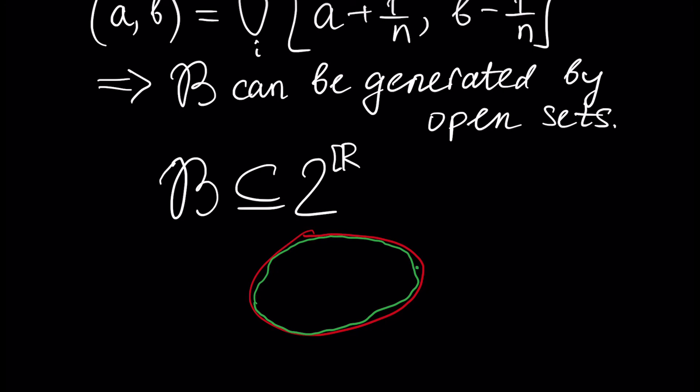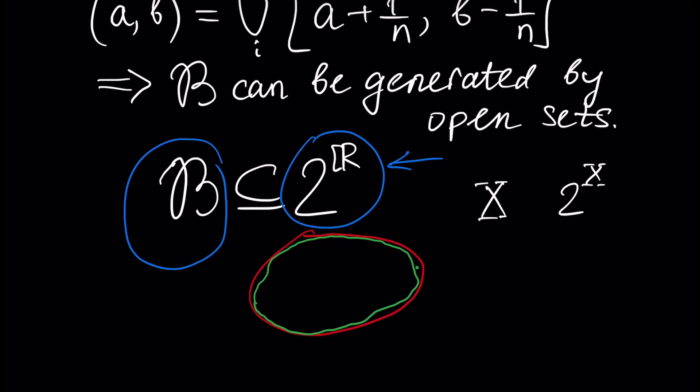Once again, the Borel sigma algebra is strictly included in the power algebra, because the power set is also a sigma algebra — it's the biggest sigma algebra. As we know, for set X, 2^X, which is the set of all subsets, is a sigma algebra, and it's the bigger sigma algebra that contains ℝ. Our Borel set B is strictly included in the power algebra, and it's very hard to construct a non-Borel set. In practice, all subsets of ℝ are Borel sets. The next very important result is about a function F being measurable in terms of the Borel sigma algebra.